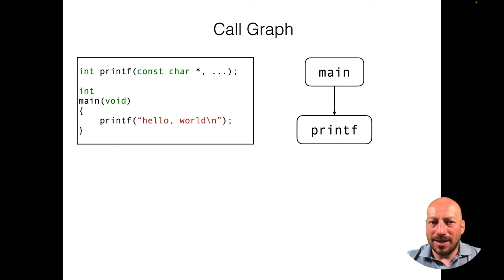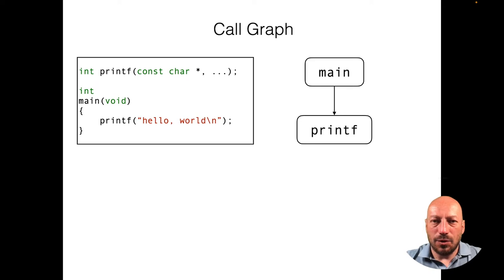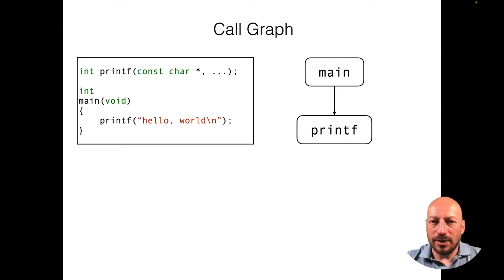In the C programming part of this lecture we are already using functions, so we already know what we're talking about. It also means that the flow charts used for describing the control flow of if-statements and loops cannot be used for describing the control flow of programs that use functions, because when a function returns it returns to a return address that depends on where the function was called.